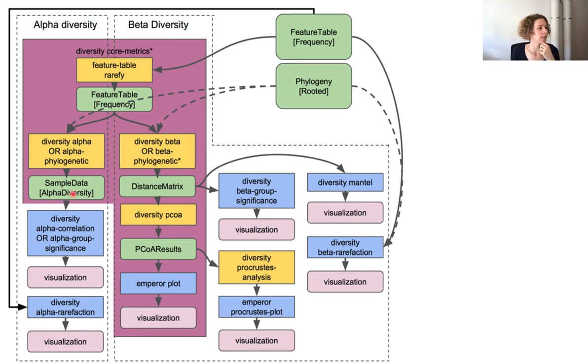And these have the artifact type sample data alpha diversity. And for beta diversity, it calculates matrices, which makes sense because we're actually comparing the samples to each other.